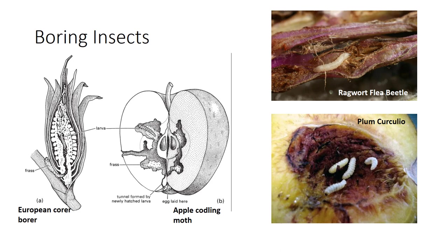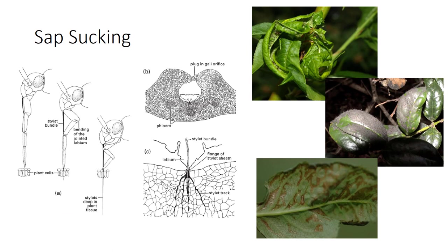Many insects damage plant storage organs by boring into tubers, corms, and bulbs. Some of the most effective biological control agents for weedy plants are specialist wood-boring insects, such as larvae of the flea beetle on invasive ragwort. The reproductive output of many plants is reduced or destroyed by the feeding activities of larvae that bore into and eat the tissues of fruits, nuts, and seeds. Fruit borers include Diptera like the Mediterranean fruit fly, Lepidoptera like the codling moth, and Coleoptera like the plum curculio.